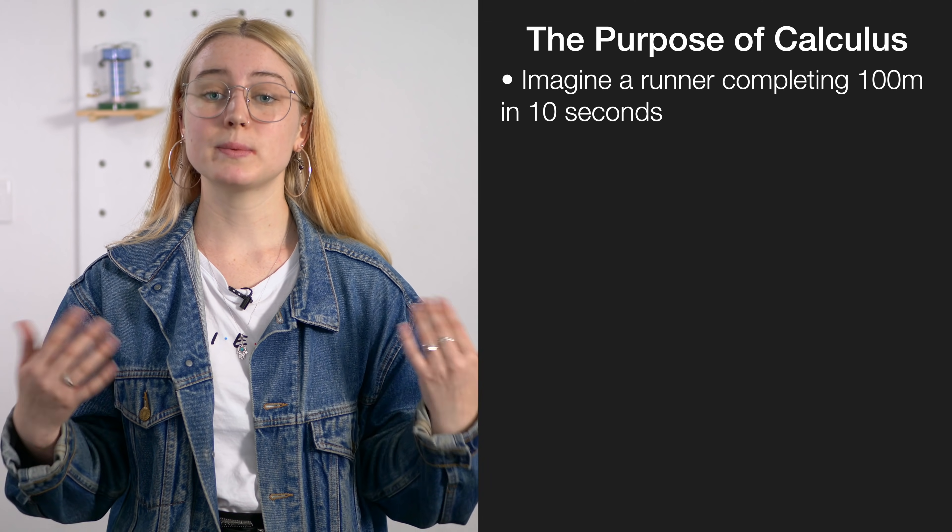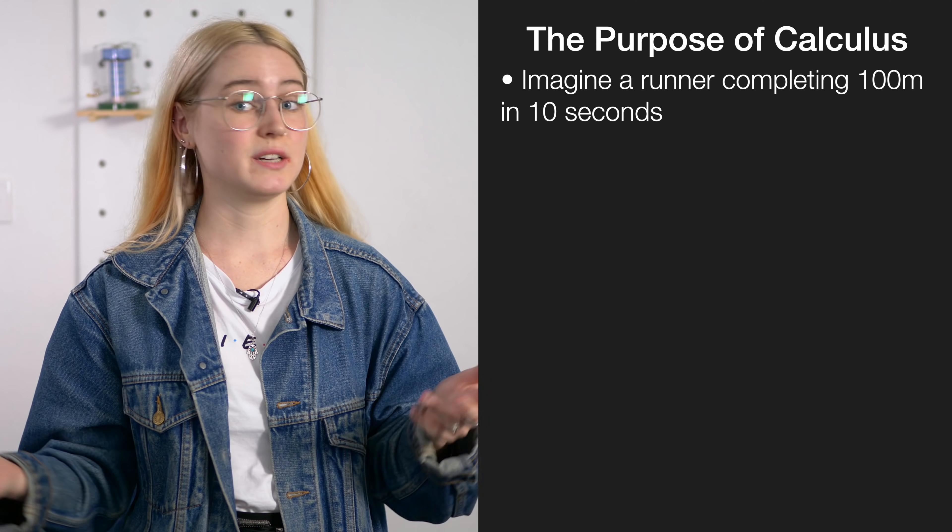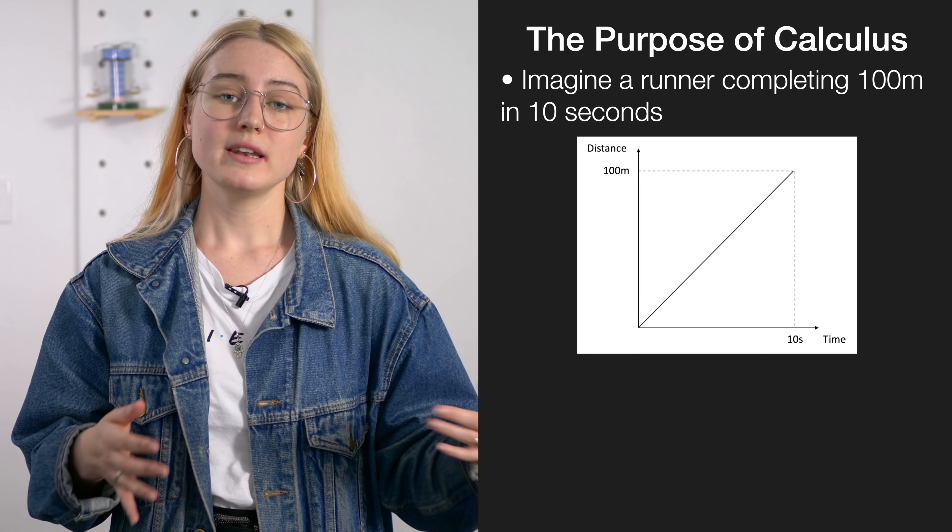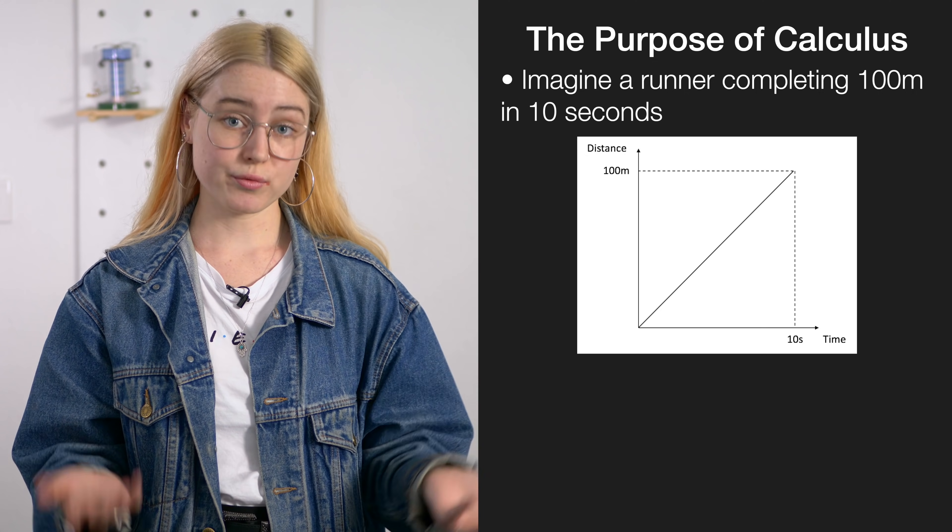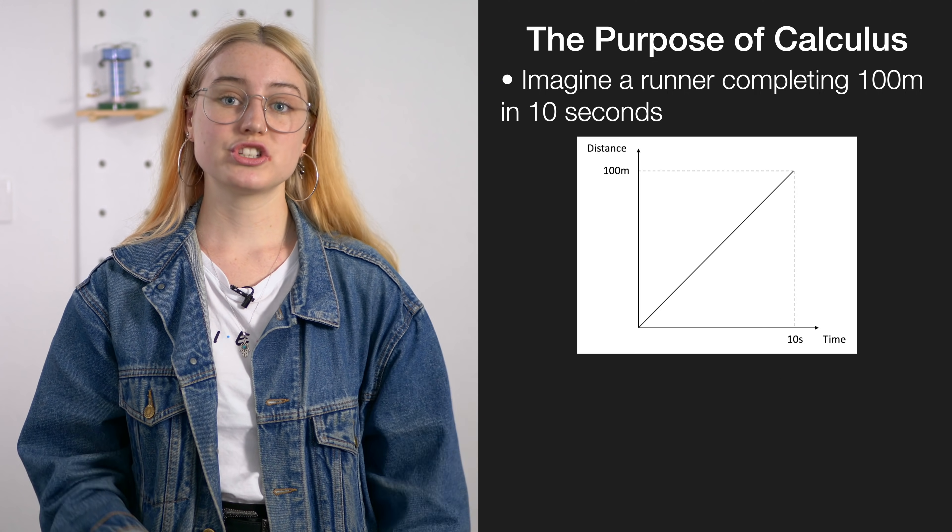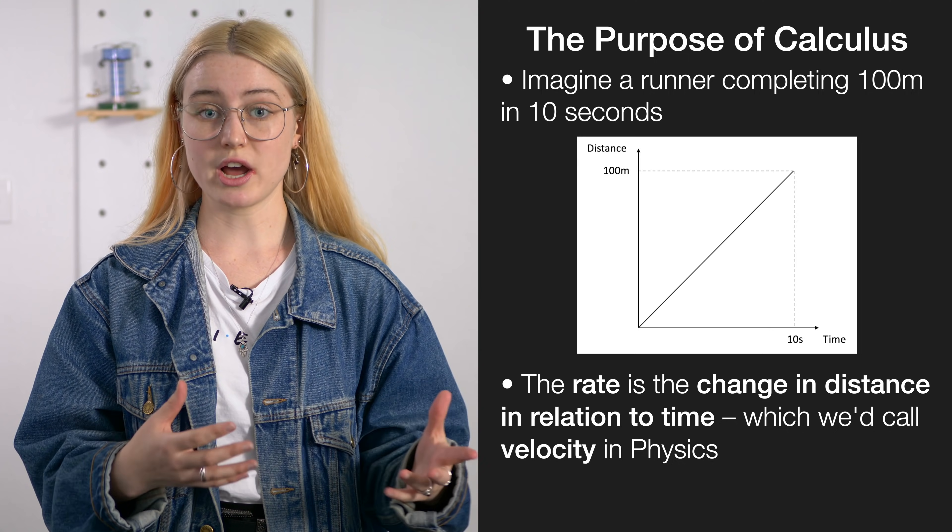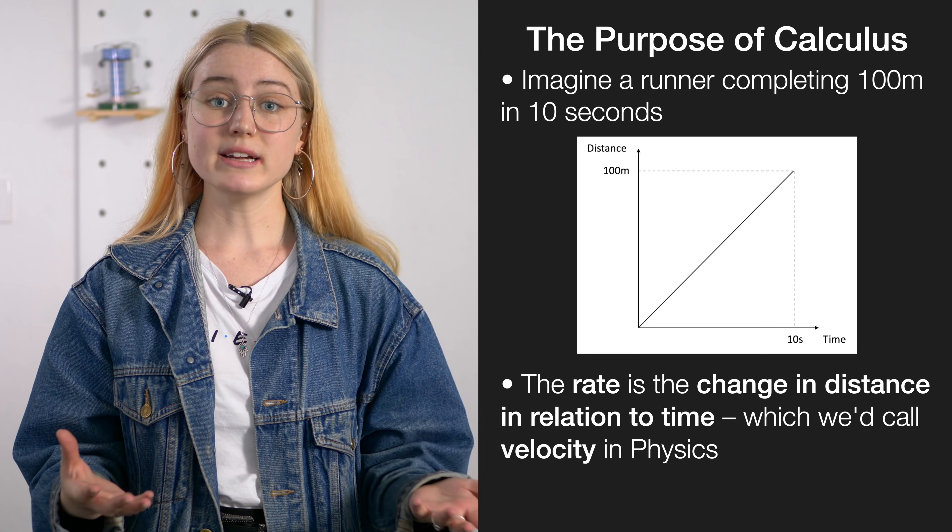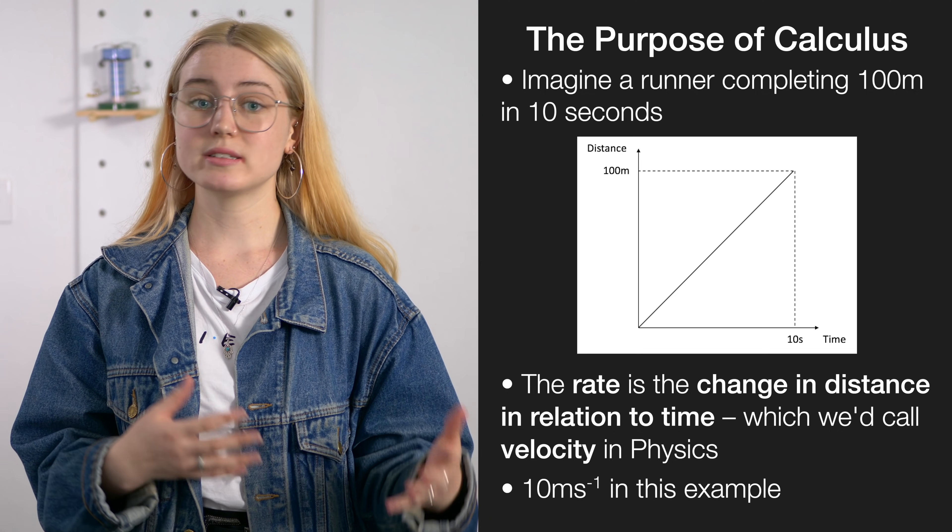In understanding the purpose of calculus, it can be handy to think back to year 10 or 11 physics using an example. So, if we use an example of a runner on a track runs 100 metres in 10 seconds, we can plot it on a distance time graph. To put it in calculus language, we would discuss the rate, and this would be the change in distance in relation to time, and in physics terms this would be our velocity. And so, our rate in this one would be 10 metres per second.